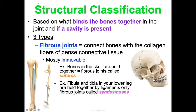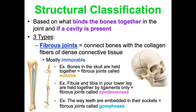Every joint can be classified both structurally and functionally. Another example of a fibrous joint: the fibula and tibia in the lower leg are held together by ligaments only — these are called syndesmosis. Additionally, the way teeth are embedded in their sockets is a fibrous joint; these are called gomphoses.